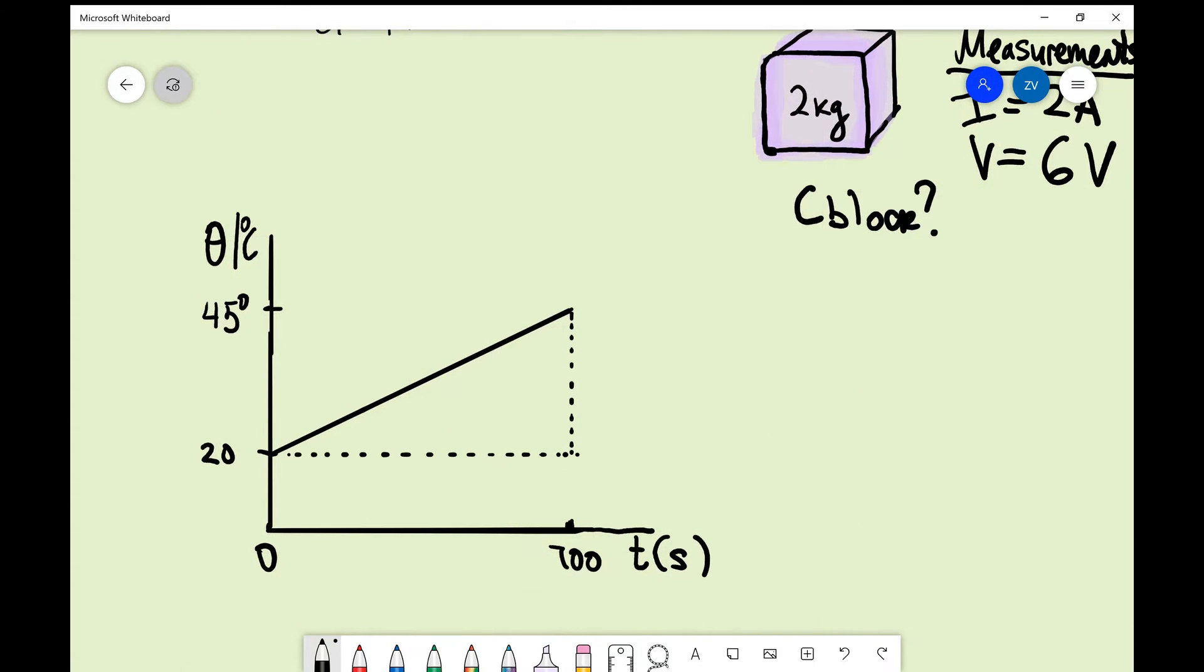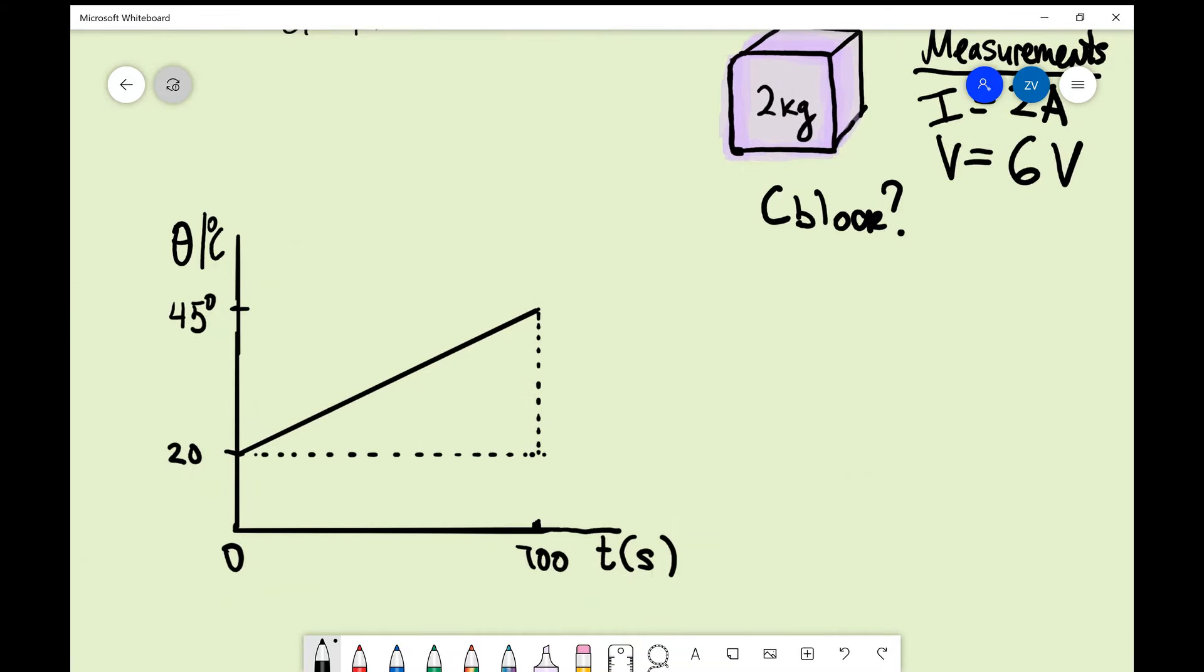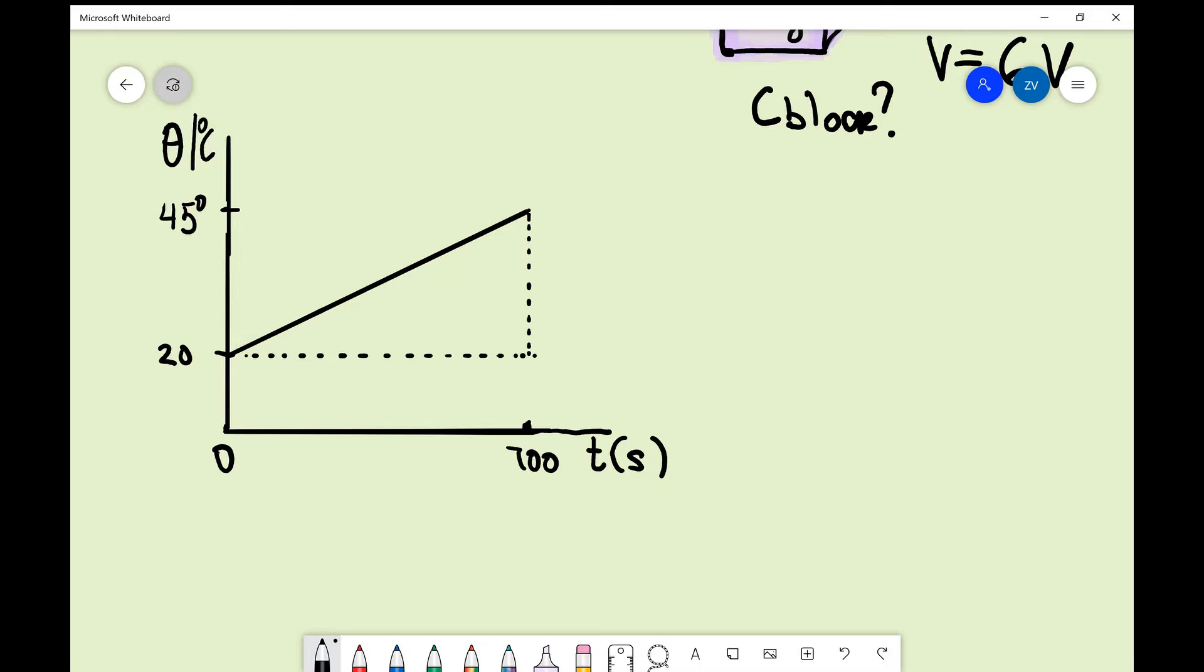Now the question is how can we use this graph to figure out the specific heat capacity of the block? So how do we determine the specific heat capacity of the block? The first step would be to write down our equation for specific heat capacity.